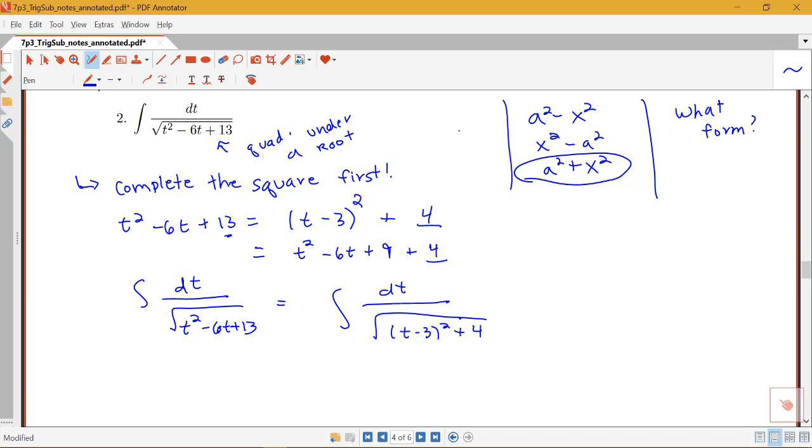Let's just remind ourselves which trig functions go with each of these. Remember the a squared minus x squared went with sine theta because of the connection with 1 minus sine squared. x squared minus a squared went with secant theta because of the connection to secant squared minus 1 being equal to tan squared. And a squared plus x squared went with tan theta.